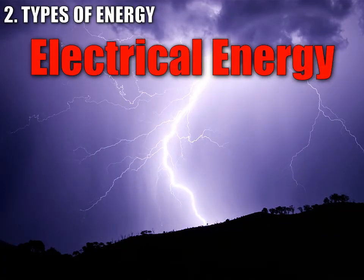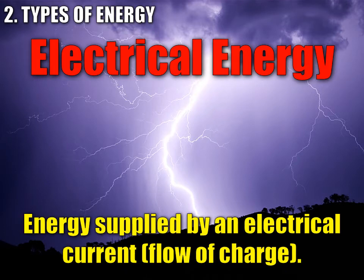The next type of energy is electrical energy. Electrical energy is energy that's supplied by an electrical current, which is the flow of charged particles. Positive charges and negative charges are attracted to each other, and it's this electrical attraction which causes these charges to move — that's called electrical energy. Lightning is a great example of electrical energy, but also your cell phone or the computer you're looking at right now all work off of electrical energy, which is flowing charge.